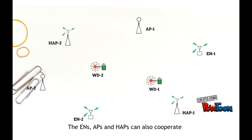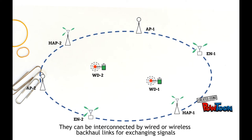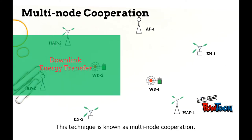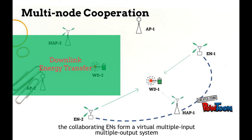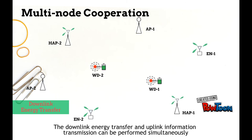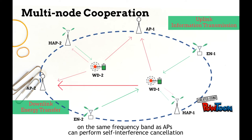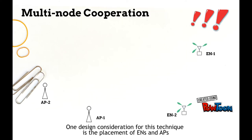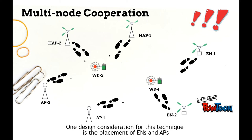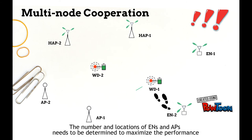The EN, AP, and HAP can also cooperate to achieve more efficient energy and information transmission. They can be interconnected by wired and wireless backhaul links for exchanging signals. This technique is known as multi-node cooperation. For downlink energy transfer, the cooperating ENs form a virtual multi-input multi-output (MIMO) system to perform distributed energy beamforming to maximize the received energy at the target WD. The downlink energy transfer and uplink information transmission can be performed simultaneously on the same frequency band, as the AP can perform self-interference cancellation. One design consideration is the placement of EN and AP when WDs are fixed in location; the number and location of EN and AP need to be determined to maximize performance.